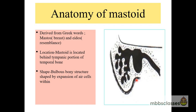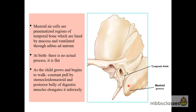If you look into the shape of the mastoid, in adults it is a solid bulbous structure which is produced by the expansion of the ear cells as the child grows. Looking at this picture to refresh our anatomy: this is the tympanic portion of the temporal bone, and this is the mastoid portion. The solid bulbous structure is situated behind the tympanic portion, but they are not at the same level.